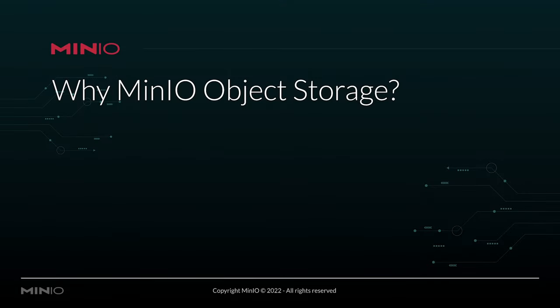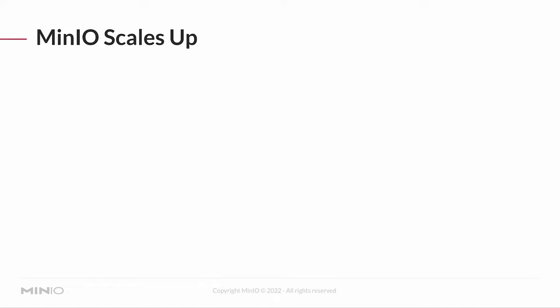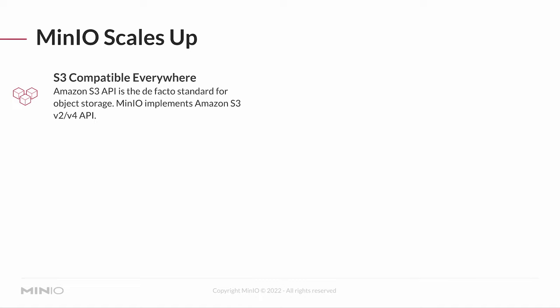Why would I choose MinIO object storage instead of just going straight to AWS? MinIO scales up. Since Amazon S3 is the de facto standard for object storage, it would be handy to start writing code with an S3-compatible backend. But if I don't want to spend the money or don't have access to Amazon S3, I can use MinIO locally to implement that S3-compatible storage and develop a proof of concept very inexpensively before moving it to a different service.